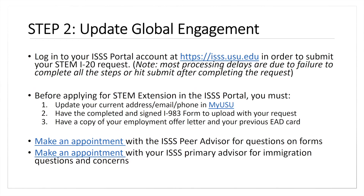Once you complete Form I-983 as part of applying for your STEM OPT extension, log into our portal and upload the document. When filling out this form, plan on three to five days to receive your I-20 — this doesn't include mailing times or any issues if the form is incomplete. Most delays are due to incomplete forms or failing to click submit in the portal. Make sure all requirements in the I-SSS portal are completed and submit by clicking the blue submit button at the top of the record. The I-983 must be signed by both you and the employer — we will not accept a blank form.